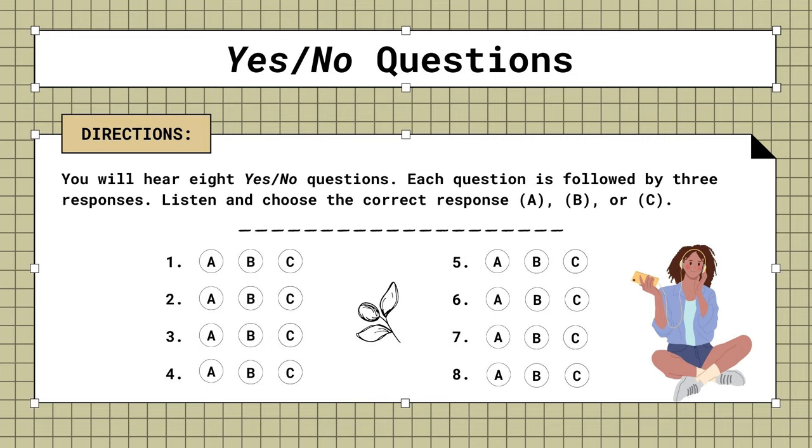4. Is your company very big? A. We have branches all over the world. B. It takes around an hour. C. The head office is in New York.